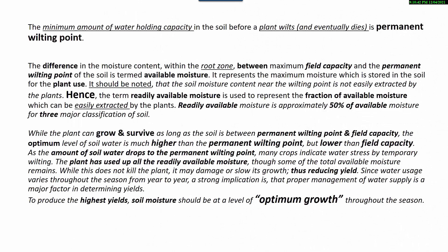The minimum amount of water holding capacity in the soil before a plant wilts and eventually dies is the permanent wilting point. The difference in moisture content within the root zone between maximum field capacity and the permanent wilting point is termed available moisture. It represents the maximum moisture stored in the soil for plant use. Since soil moisture near the wilting point is not easily extracted by plants, the term readily available moisture is used to represent the fraction of available moisture easily extracted by plants. Readily available moisture is approximately 50% of available moisture for the three major classifications of soil.